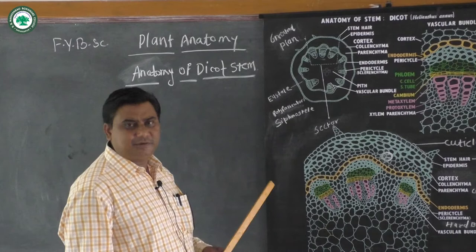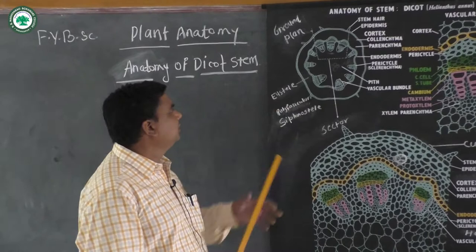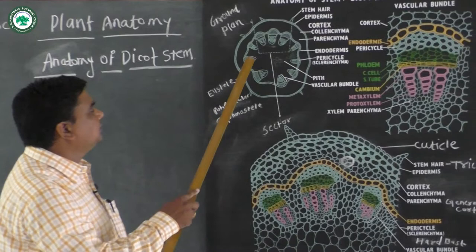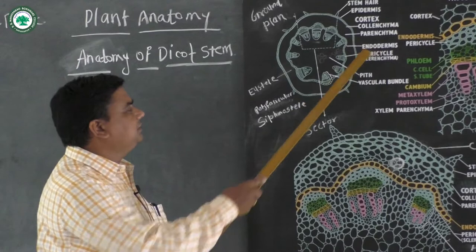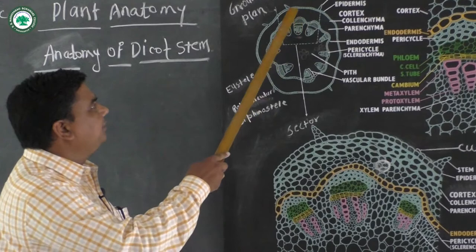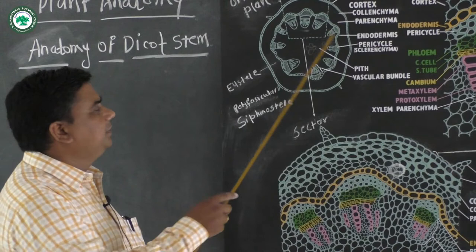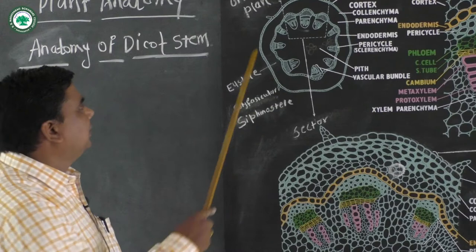Here are the pictures on the particular chart — the ground plan of the particular dicot stem. This is the ground plan of the dicot stem consisting of three parts. The first and outermost part is the epidermis, the innermost part is the particular vascular tissue, and the middle part is the cortical region. These three parts — epidermis, cortical region, endodermis, and vascular bundle — are seen in this particular diagram.